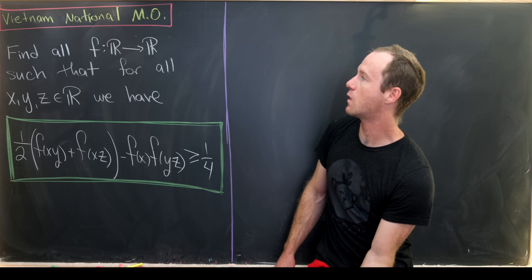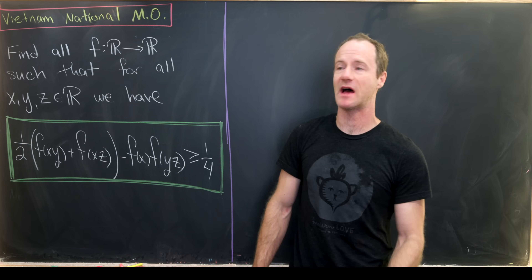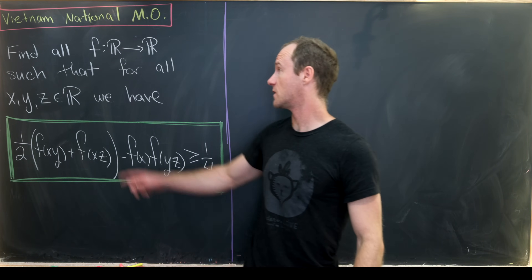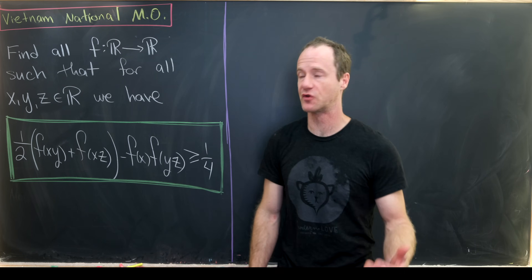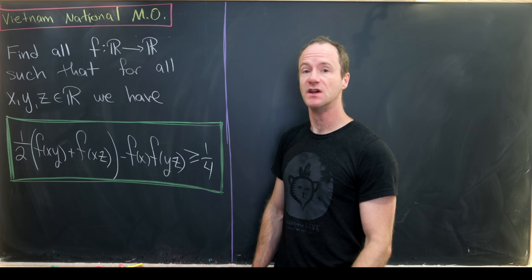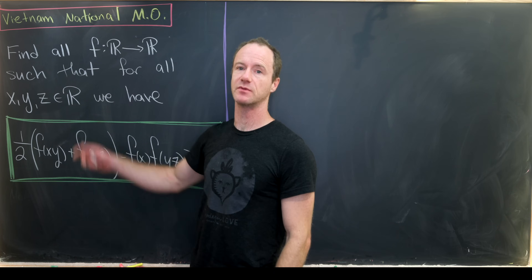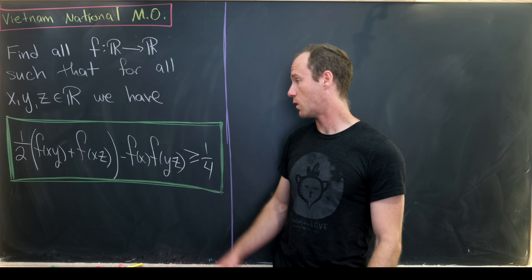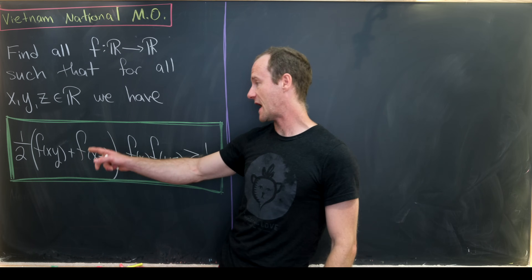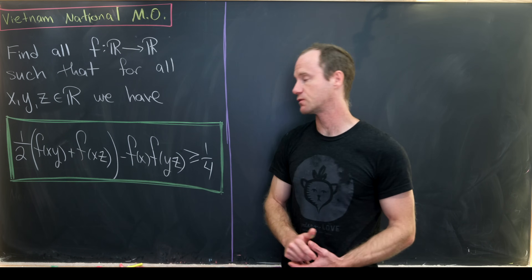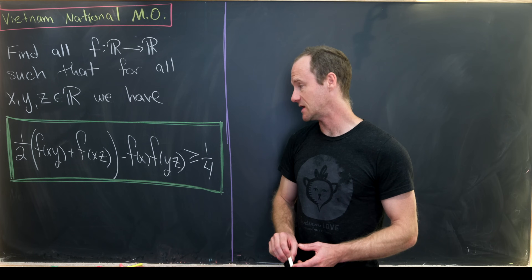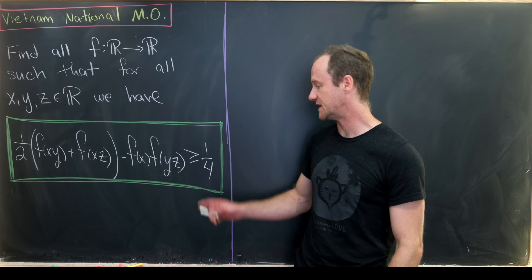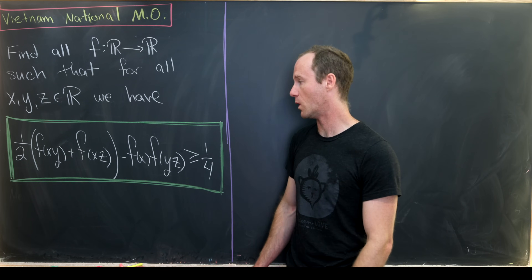Today we've got a nice functional inequality from the Vietnamese National Math Olympiad. Our goal is to find all functions from ℝ to ℝ such that for all real numbers x, y, and z, we have the following inequality: one-half times the quantity f(xy) plus f(xz), minus f(x)·f(yz), is greater than or equal to one-fourth.